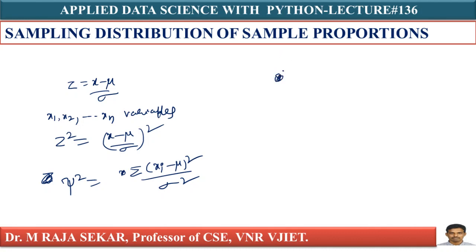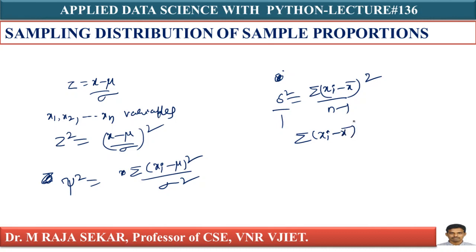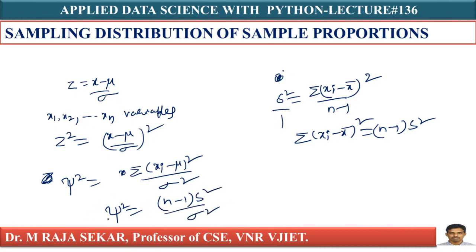The sample variance formula is S² = Σ(Xi − X̄)²/(n−1). Cross-multiplying gives Σ(Xi − X̄)² = (n−1)·S². Substituting into the chi-square expression: χ² = Σ(X − μ)²/σ² = (n−1)·S²/σ². Therefore, chi-square equals (n−1)·S²/σ².